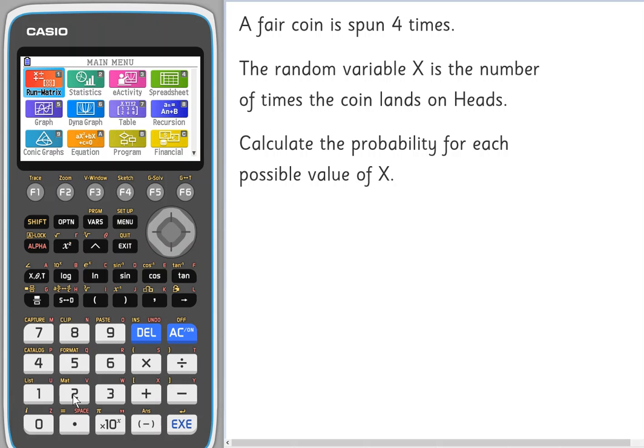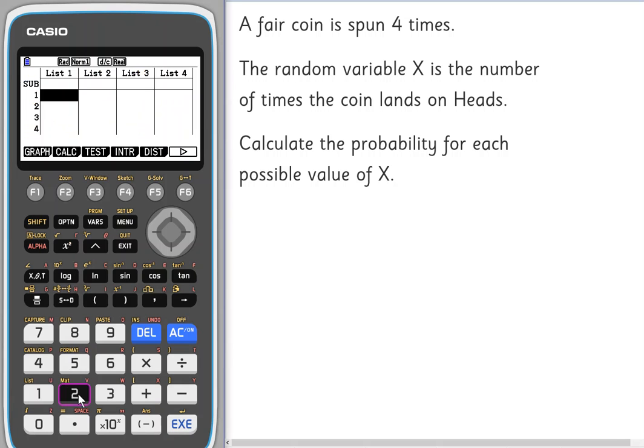On your GDC you need to choose menu item two, statistics. What we're going to do in list one is enter the possible values of X, so we're going to enter zero, one, two, three, and four and store those in list one.